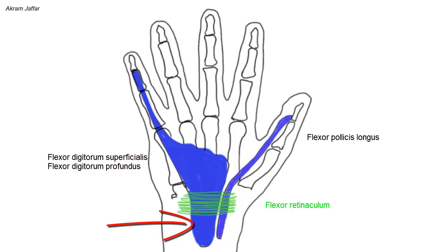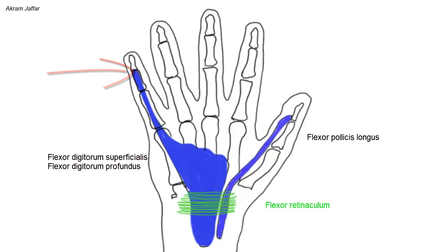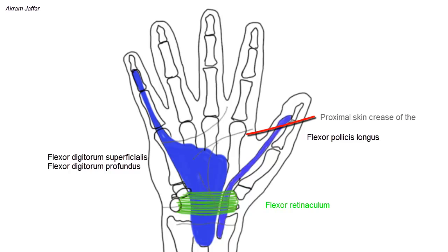Distally, the medial part of the sheath continues without interruption on the tendons of the little finger as far as the distal phalanx, same as in the thumb. This can be understood since, next to the thumb, the little finger is the most mobile and synovial sheaths are needed to reduce friction and increase mobility. The remainder of the sheath ends blindly about the level of the proximal skin crease of the palm.